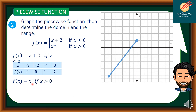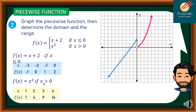For f(x) = x² if x > 0, starting from x = 1: f(1) = 1; f(2) = 4; f(3) = 9; f(4) = 16. Since x > 0, we exclude x = 0, which is shown as a hollow point on the graph.